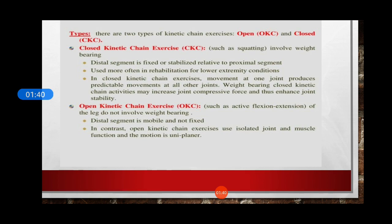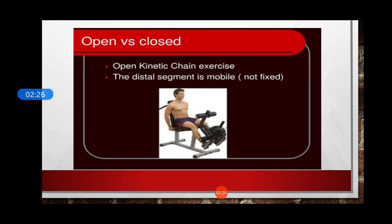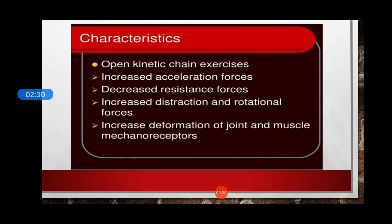Closed kinematic chains, such as squatting, involve weight bearing. Here the distal segment is fixed or stabilized relative to the proximal segment, and they are mainly used more often in rehabilitation for the lower extremity. In closed kinetic chain exercises, movement at one joint produces predictable movements at all other joints. In open kinetic chain exercises such as active knee flexion and extension or active shoulder flexion and extension, the leg or shoulder do not involve weight bearing. So the distal segment is mobile. In contrast, open kinetic chain exercises use isolated joints and muscle functions, and the motion is uniplanar. Here we see increased acceleration forces, decreased resistance forces, and increased distraction and rotation forces.